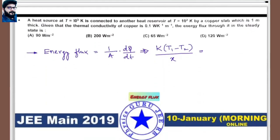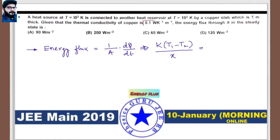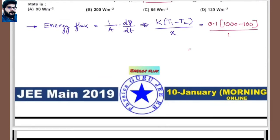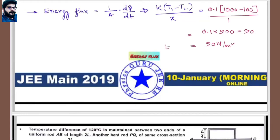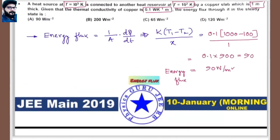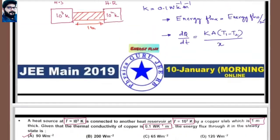Substituting values: k = 0.1, T1 = 1000 K, T2 = 100 K, x = 1 m. Energy flux = 0.1 × (1000 − 100) / 1 = 0.1 × 900 = 90 W/m². This matches option A.